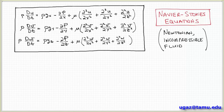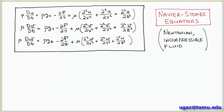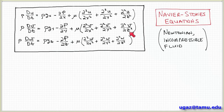We're almost finished with our discussion of the conservation of momentum. To recap, last time we obtained this system of nonlinear partial differential equations called the Navier-Stokes equations. This represents Newton's second law of motion applied to a fluid element. The time rate of change of momentum — the accumulation term and the flow term — equals the sum of forces on the fluid element: gravity and shear stresses. We separated out the pressure term (the normal stress term) and used a constitutive equation assuming a Newtonian, incompressible fluid.